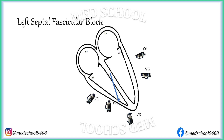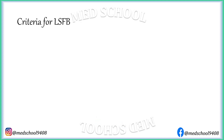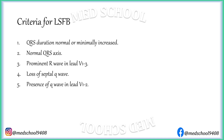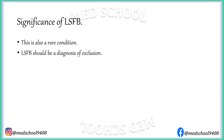Hence, leads V1, V2, and V3 have a prominent R wave. The criteria for left septal fascicular block are: QRS duration normal or minimally increased; normal QRS axis; prominent R wave in leads V1 to V3; loss of septal Q waves; and presence of Q wave in leads V1 and V2. Left septal fascicular block is also a rare condition and should always be a diagnosis of exclusion.